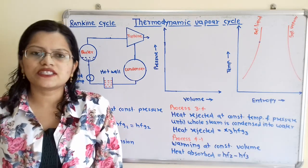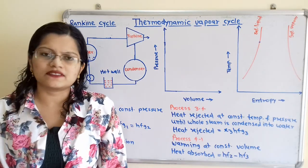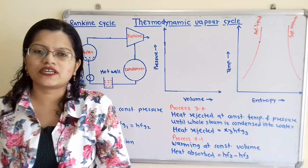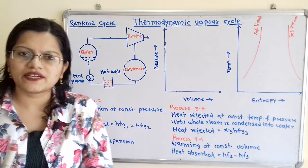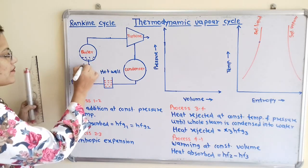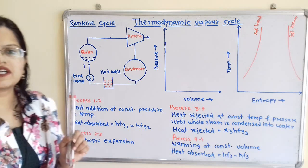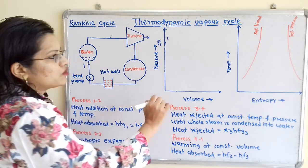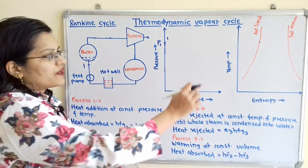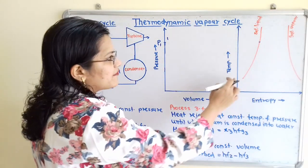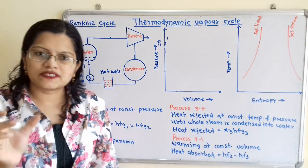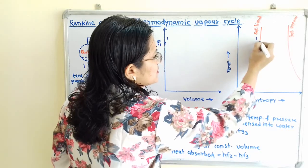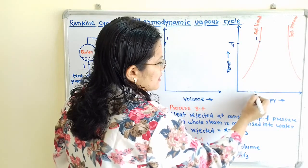Let us consider the initial condition of the working substance. This working substance has different phases — liquid, then vapor. So we will consider 1 kilogram of saturated water at pressure P1, volume V1, and temperature T1 entering into the boiler. At the entrance of the boiler we consider point 0.1, which is saturated water in liquid phase, at pressure P1, volume V1, and temperature T1. On the temperature-entropy diagram, here is the saturated liquid line and the saturated vapor line. Since the working substance is saturated water in liquid phase, we place point 0.1 on the saturated liquid line, having temperature T1 and entropy S1.